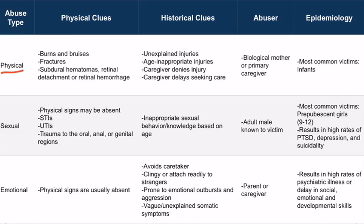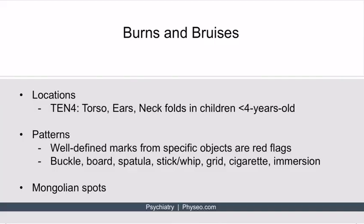With physical child abuse, there are physical clues that can be useful — for example, burns and bruises. Those should definitely raise alarm for child abuse. There are two main things to keep in mind regarding burns and bruises: locations and patterns. When it comes to locations, remember the acronym 10-4, which will help you remember torso, ears, and neck folds — watch for these in children less than four years old.